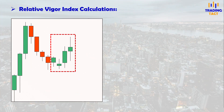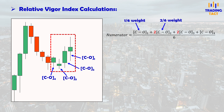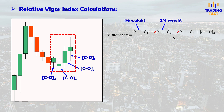Here's how the RVI is calculated. First, look at the four most recent bars and get the difference between the close and open for each bar. Apply a symmetrically weighted moving average to these four values — this moving average applies a higher weighting to the middle values. Let's call this the numerator value. Now we calculate the denominator, which is a symmetrically weighted moving average of the difference between each bar's high and low, again using the four most recent bars.